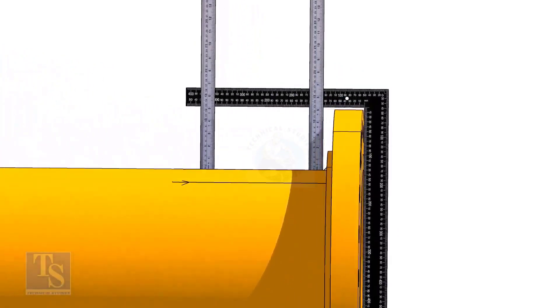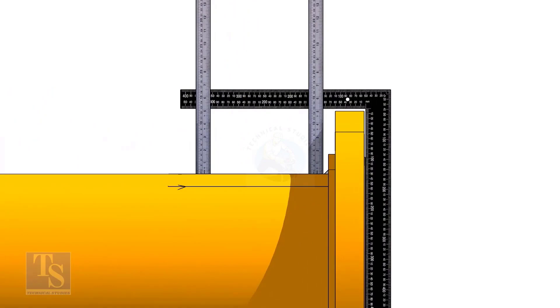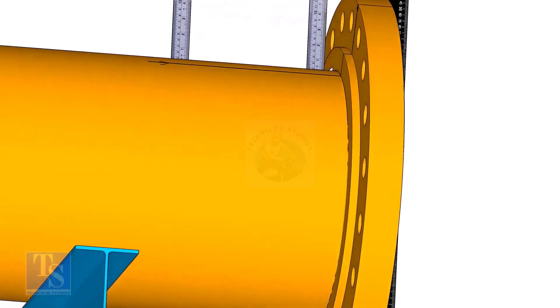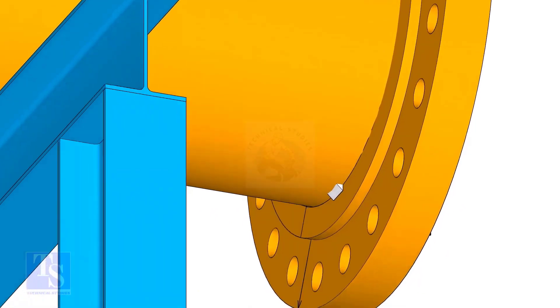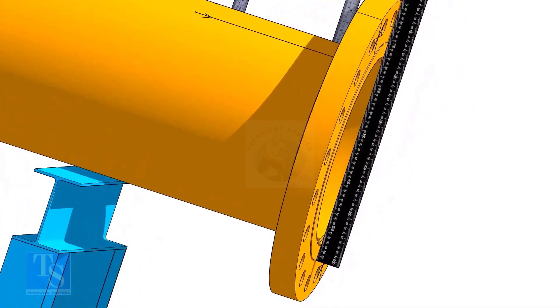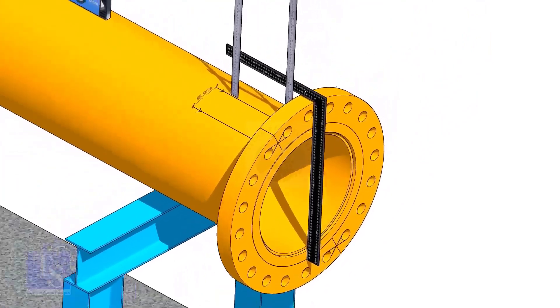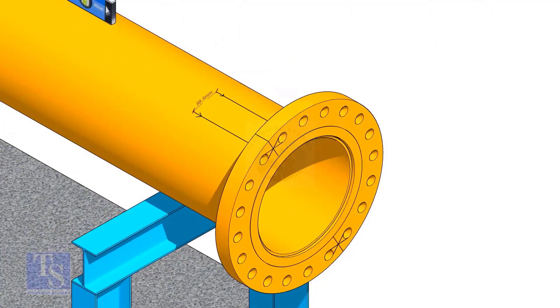Tack weld on the top of the pipe with the flange and check the squareness. If correct, tack weld at the bottom side also. Now, maintain the squareness of the opposite side and tack weld on both sides.